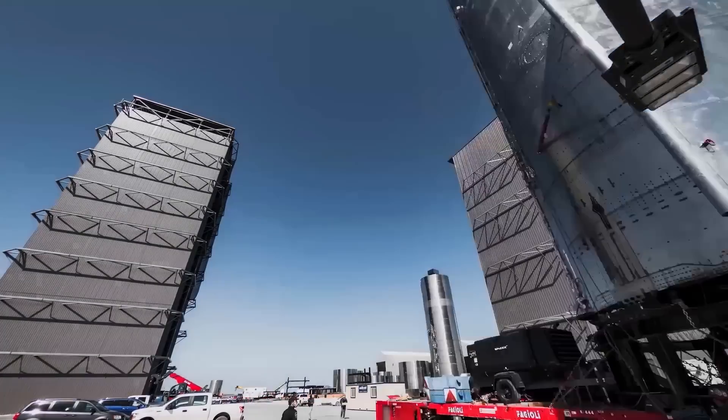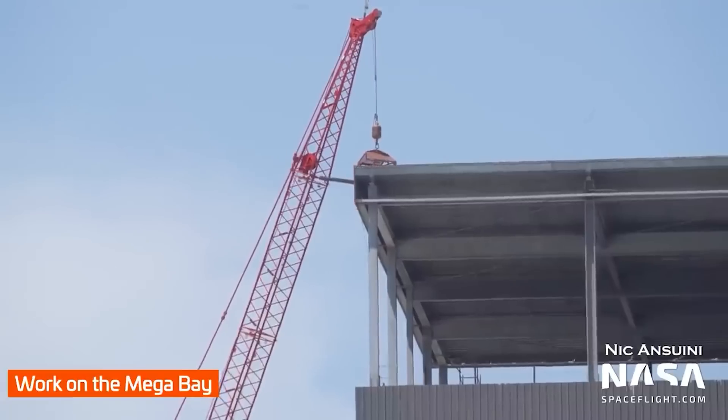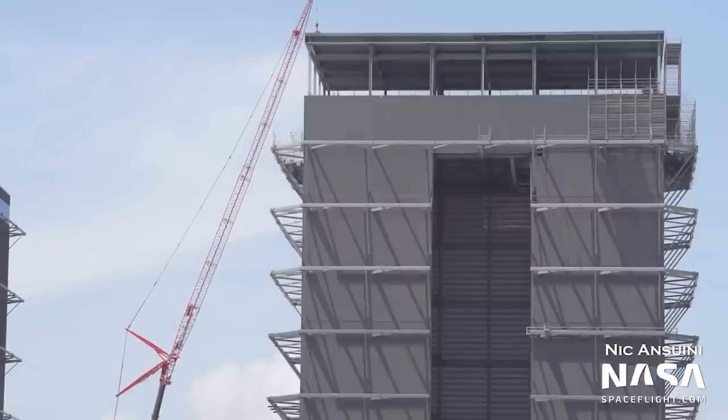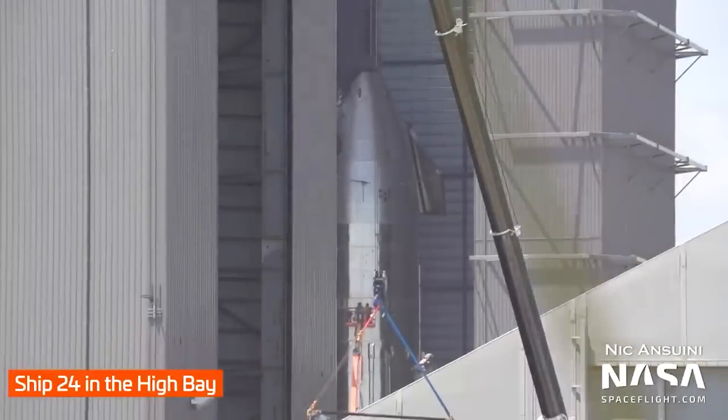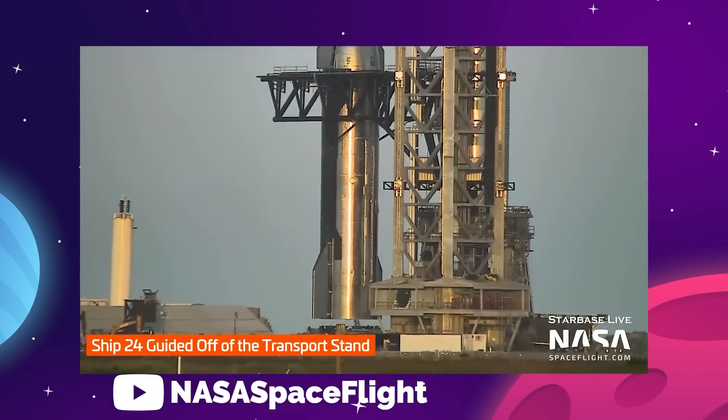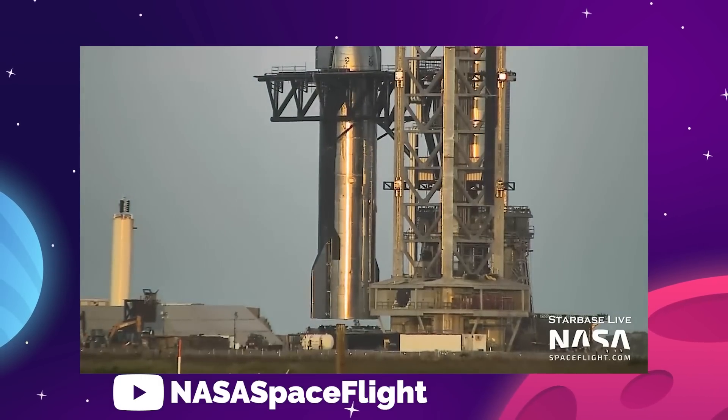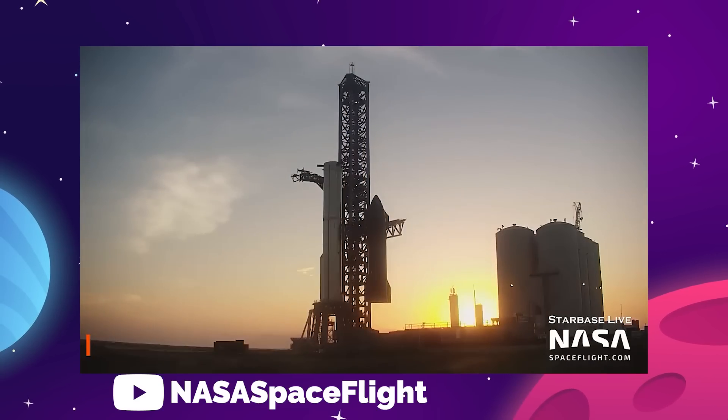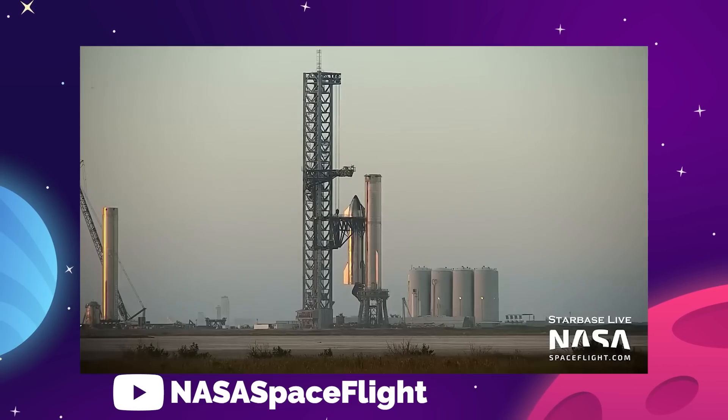SpaceX wheeled out Ship 24. The flurry of work in the last couple of months at the Texas facility has been leading many observers to guess that a full stack would be coming, but as the arms lowered to pick up S-24, it was still exciting to see this process happening so soon. It took about an hour to lift Ship 24 into position, and about 3 hours in total to get the whole process done.